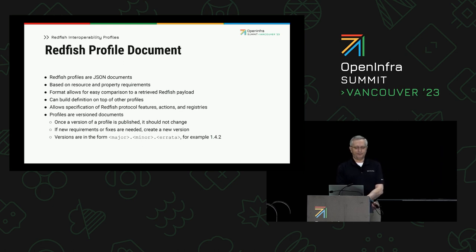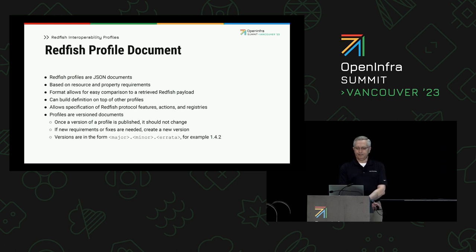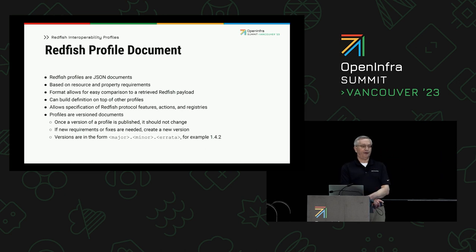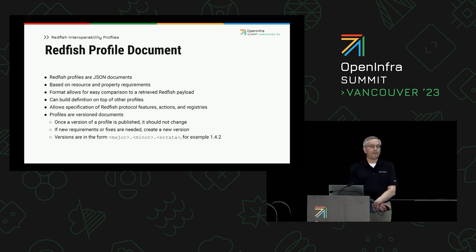So let's dive down and take a look at a Redfish profile document. Redfish profiles are also JSON documents. They're based on resource and property requirements — a resource being one of those schemas. The format allows for easy comparison to a retrieved Redfish payload, which is typically a resource that complies with the schema. You can build profiles on the shoulders of existing profiles. As I mentioned, there was a base profile for OCP and its other profiles are built on top of that. The profile document allows specification of Redfish protocol features, actions, and registries. A Redfish Interoperability Profile is a versioned document.